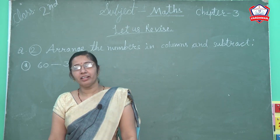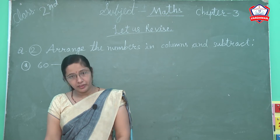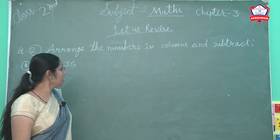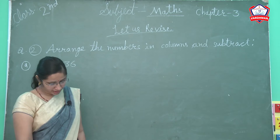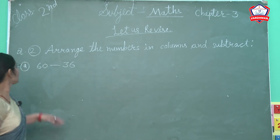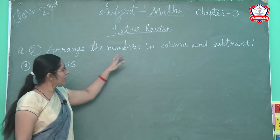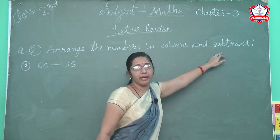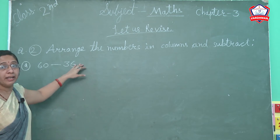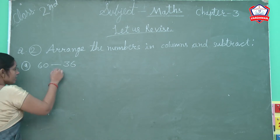Good morning students, welcome to Vardhumaan e-learning class. In the previous video we completed the revision of question number 1 — tick the right answer. Today we start question number 2: arrange the numbers in column and subtract. Numbers ko column mein arrange karna hai, phir subtract karna hai. Let us arrange it.